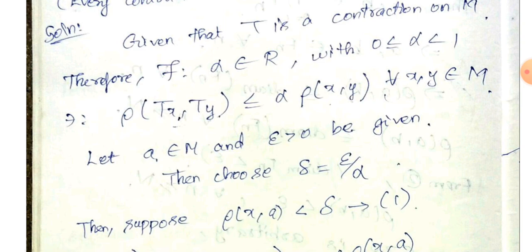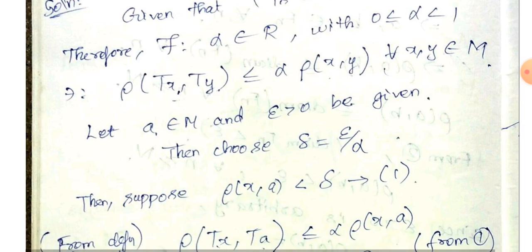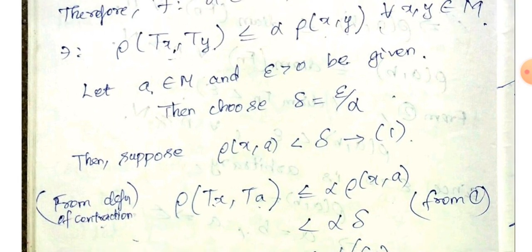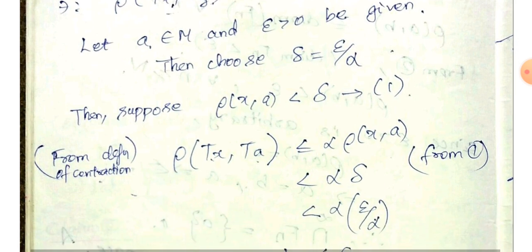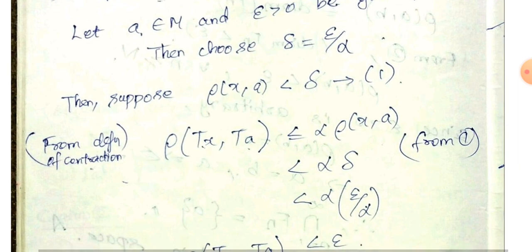For all x and y belonging to M. Let a belong to M and ε > 0 be given. Then choose δ = ε / α. Suppose ρ(x, a) < δ — that is equation 1. From the definition of contraction applied to two points x and a, we get ρ(Tx, Ta) ≤ α · ρ(x, a).